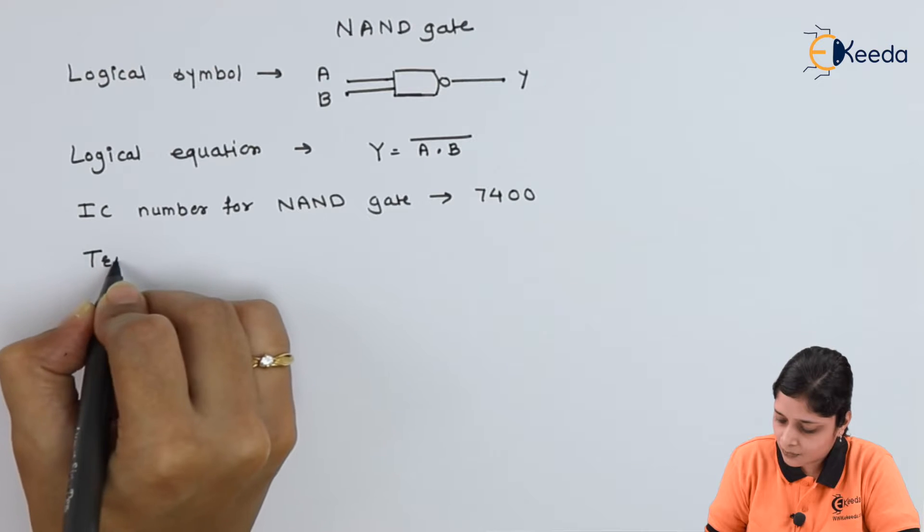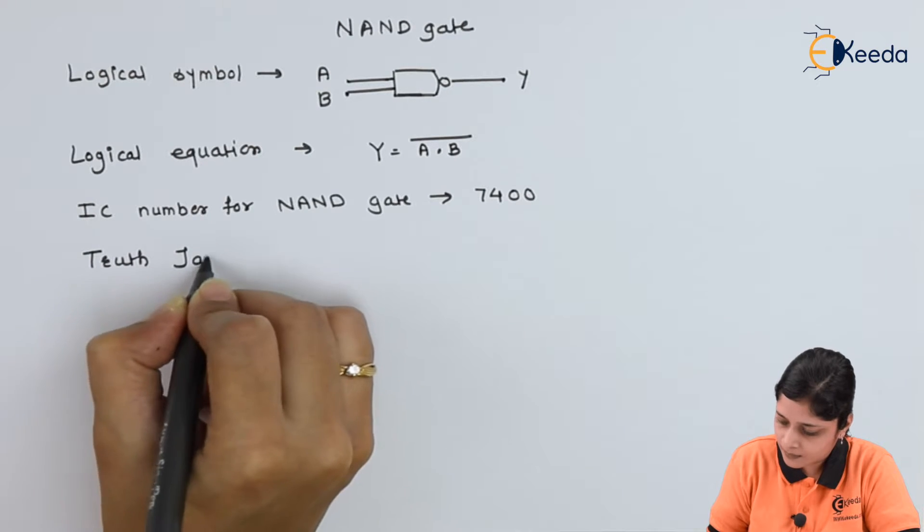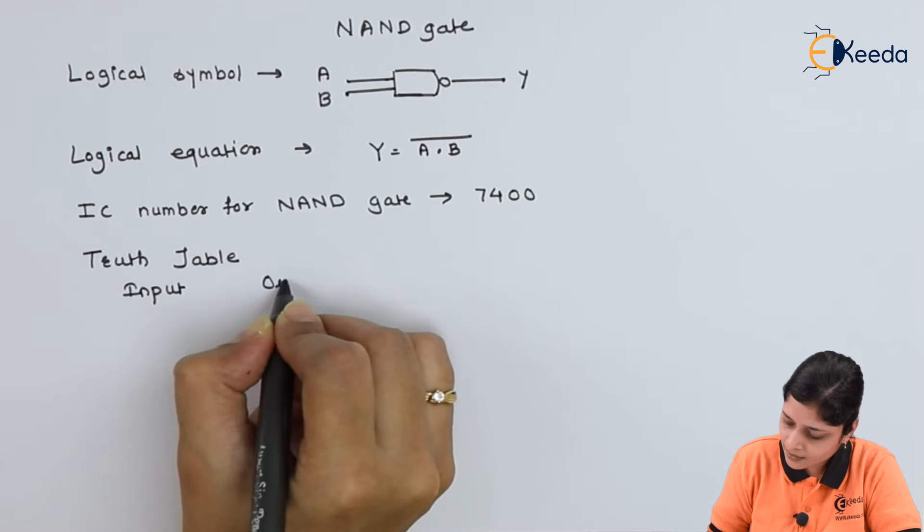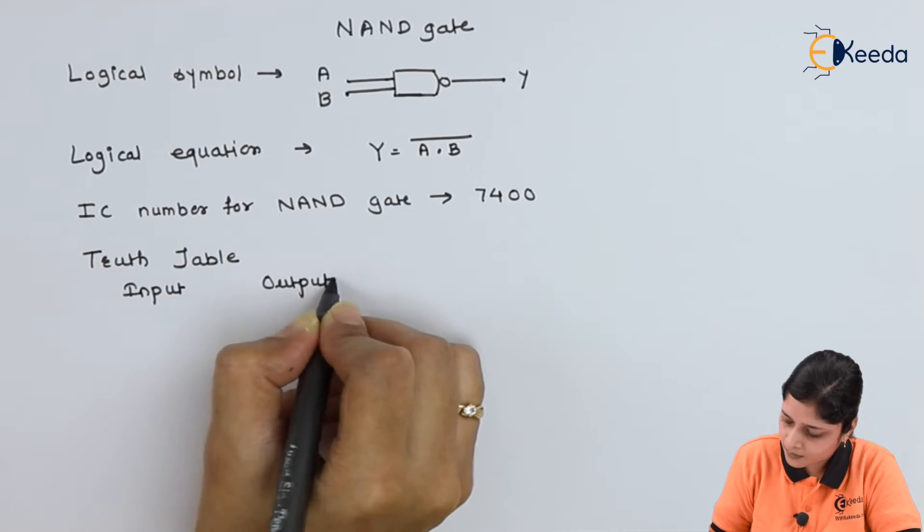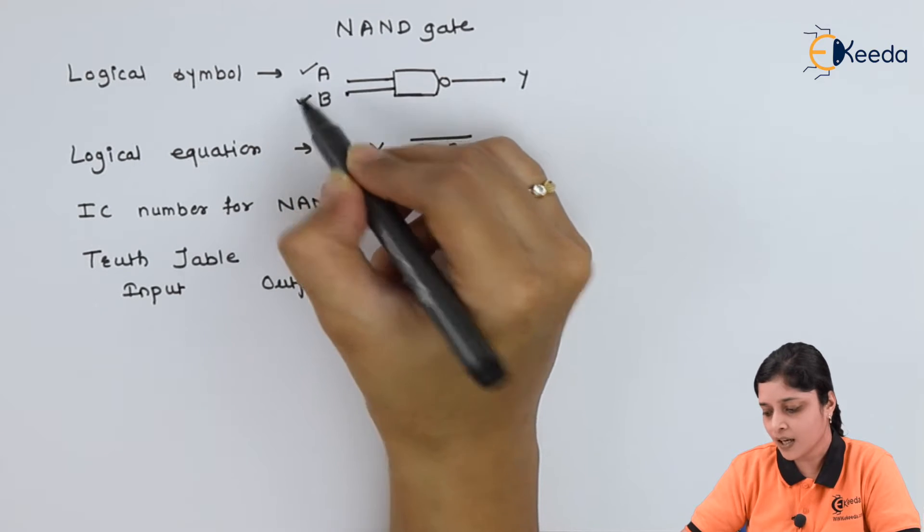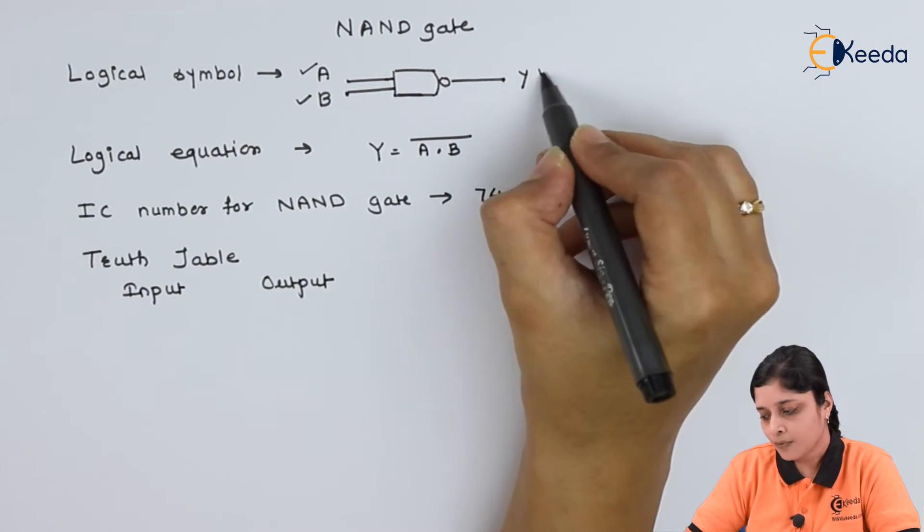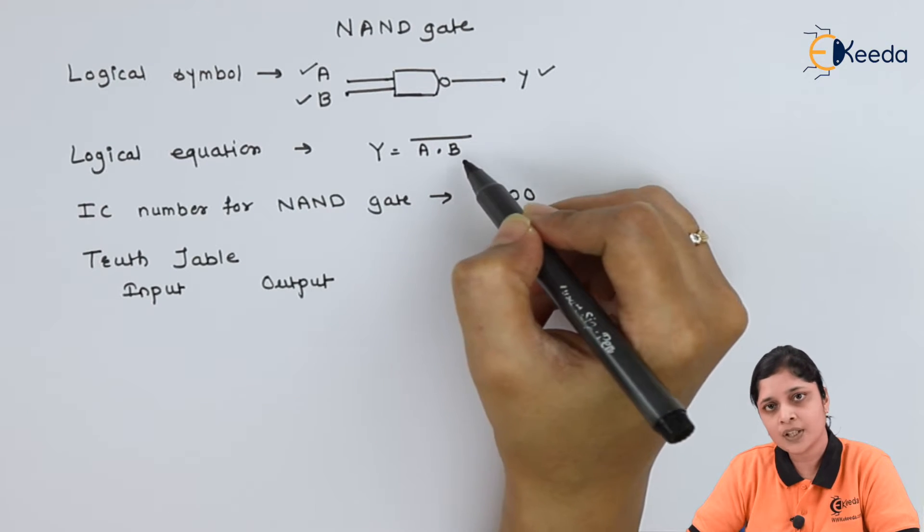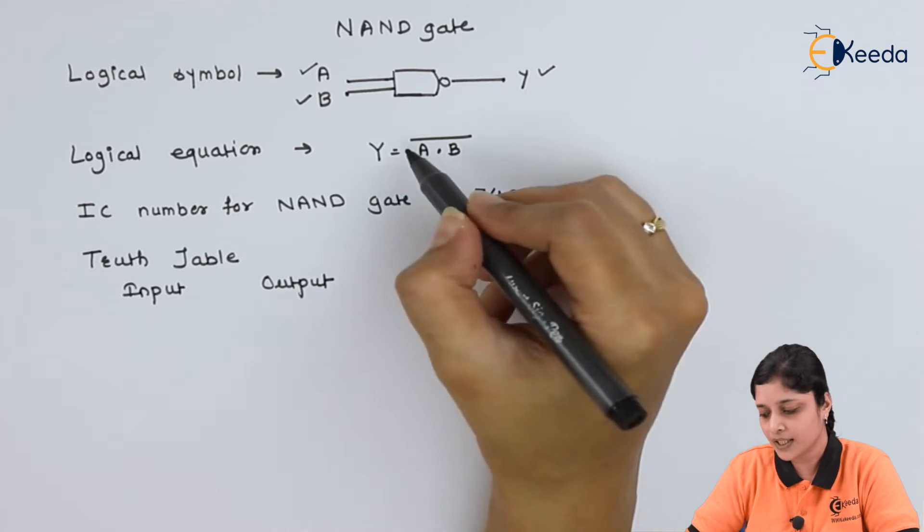NAND gate, now we will start with the truth table. Input side and output side. Here how many inputs are here? A and B are called as input. Y is called as output. While putting the values of A and B you will get your corresponding output that is Y.